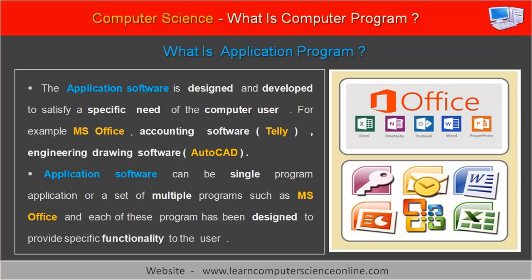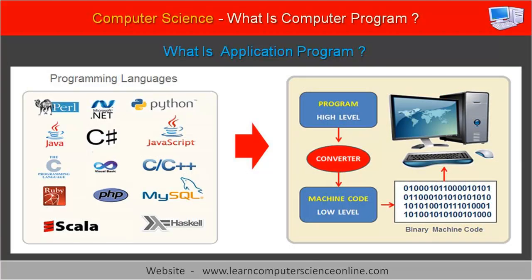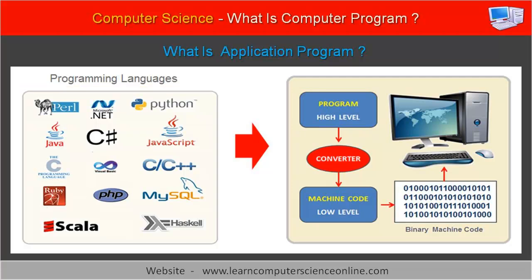For example, we generally use Microsoft Word for creating documents, PowerPoint for making presentations, and Excel spreadsheet software for creating spreadsheets. The application program is written in a high-level programming language, such as C, Java, C++, Python, or any other high-level programming language.